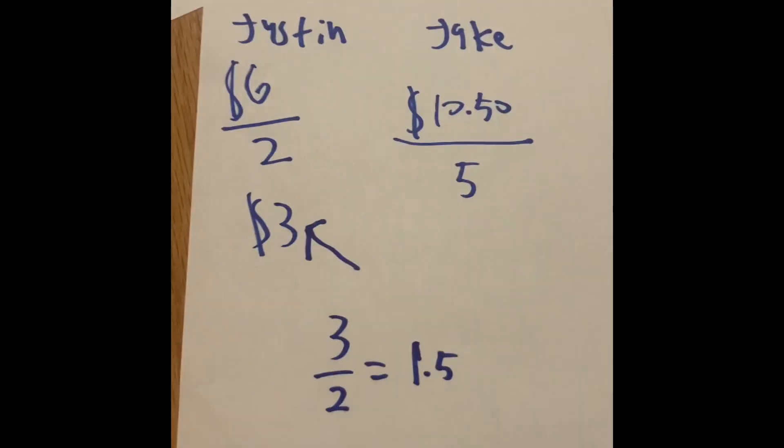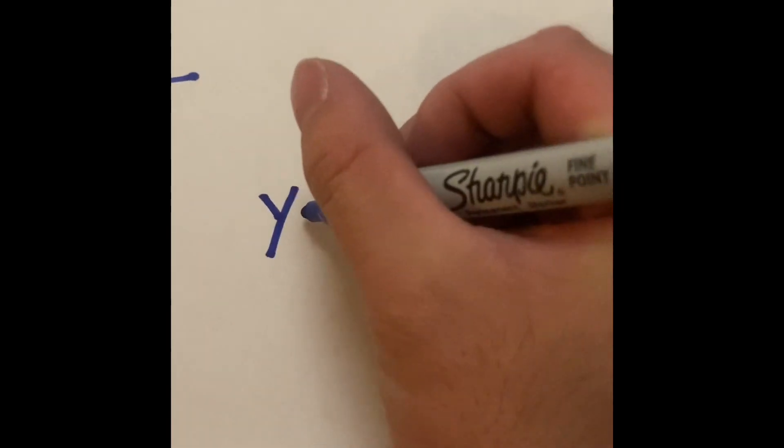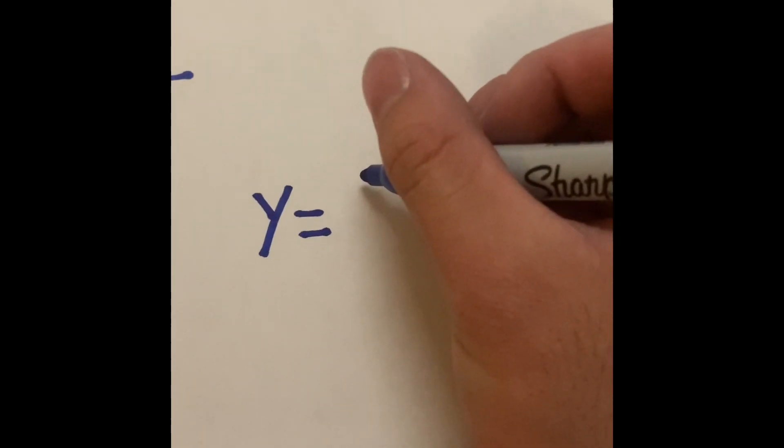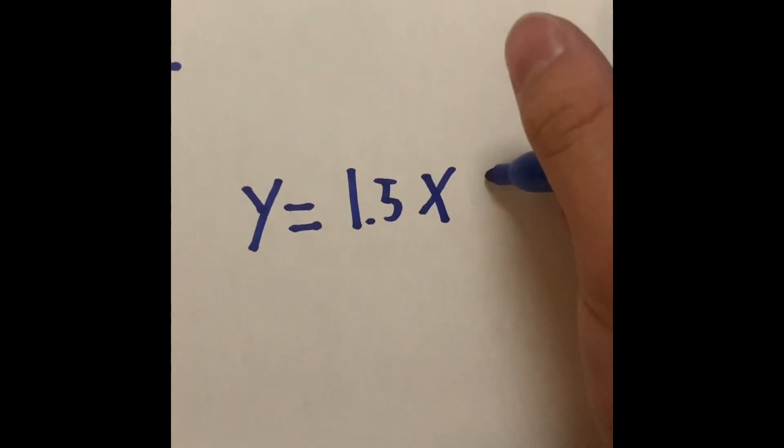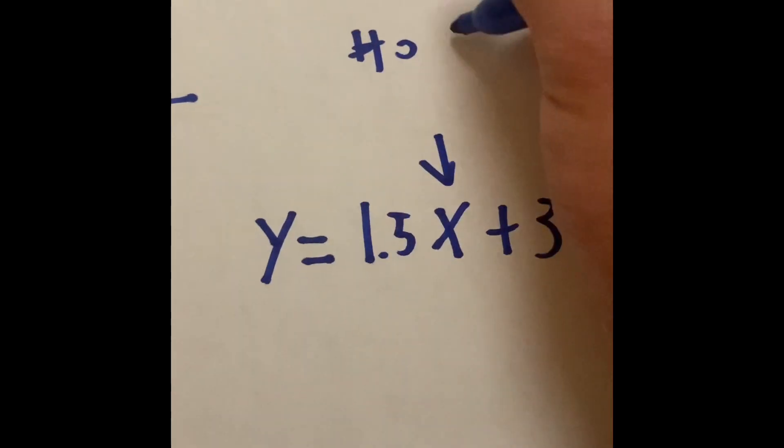So, to formulate this into a problem for slope intercept, the total cost of the ice cream as y is going to be equal to 1.5x plus 3. So, x represents the number of toppings.